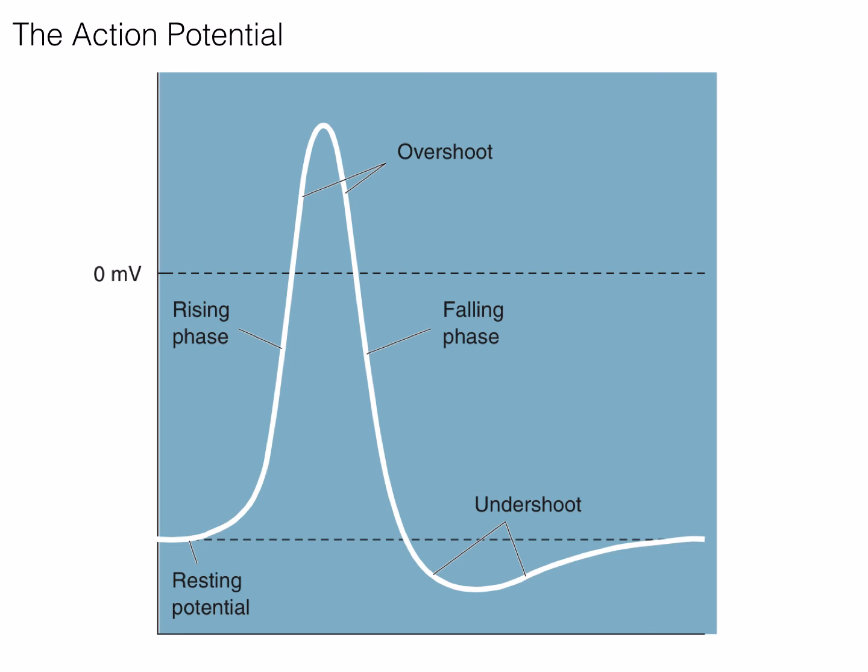At the peak of the action potential, sodium channels close and potassium channels open. We can recall that potassium concentration is higher intracellularly, meaning the opening of potassium channels will cause a rush of positive charge to leave the neuron — the falling phase — repolarizing the neuron. However, because there is a delay in closing voltage-gated potassium channels, the overall voltage of the neuron dips below resting potential. This dip is called the undershoot, and is a period of hyperpolarization.